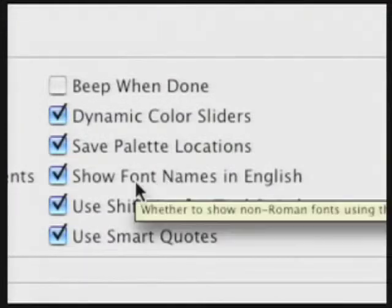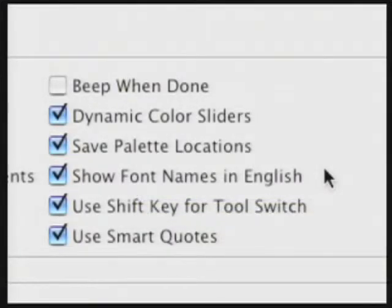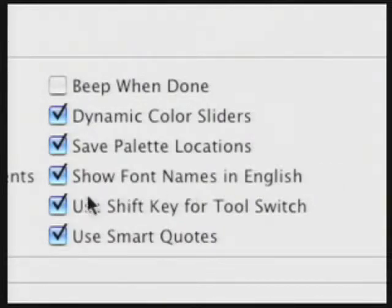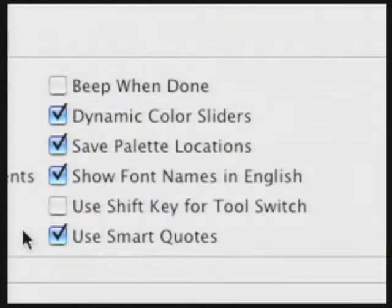If you'd like to see font names in English instead of special characters, that can be helpful. Old-timers in Photoshop may remember cycling through tools by pressing just the letter — for example, pressing M would cycle between the elliptical and rectangular marquee tools. Later, Photoshop required holding Shift plus the letter. This is now an option: if you'd like an easier time switching tools, disable the Use Shift Key for Tool Switch checkbox. Finally, there's Use Smart Quotes — smart quotes are true quote marks for quotations or apostrophes, but be careful if you're marking feet and inches, as apostrophes and quote marks will be substituted.